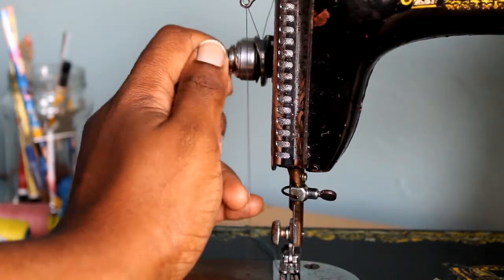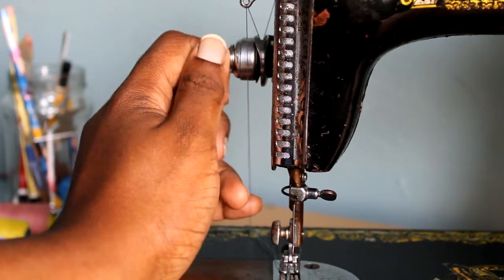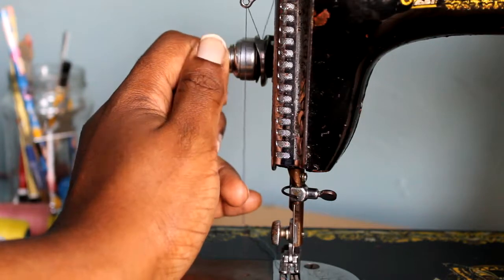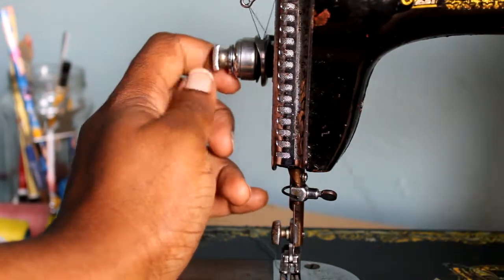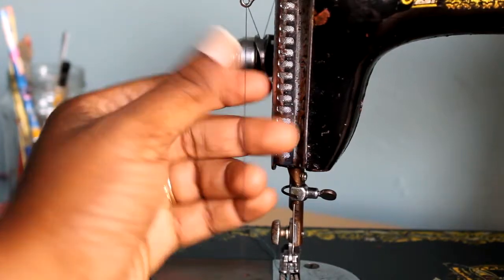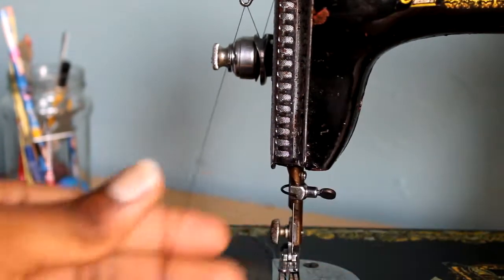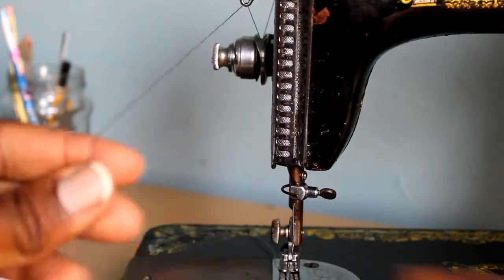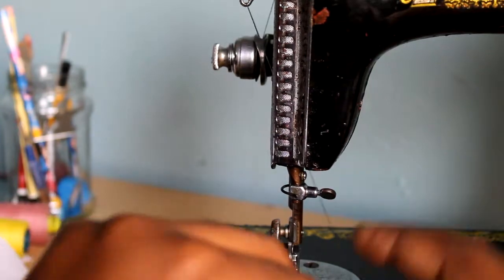So my thread is too tight, I can't pull it. I'm just going to turn the knob slowly so the thread starts moving freely. Now I can pull it. It shouldn't be so free it just falls out, but it should be free with some resistance. Now I'm just going to thread the rest of the machine.